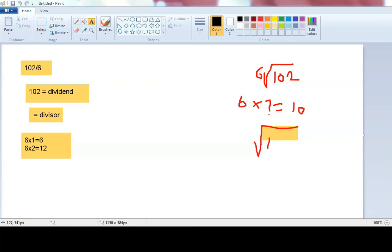102 divided by 6. 6 into 10, one time. 1 multiplied by 6 gives 6.